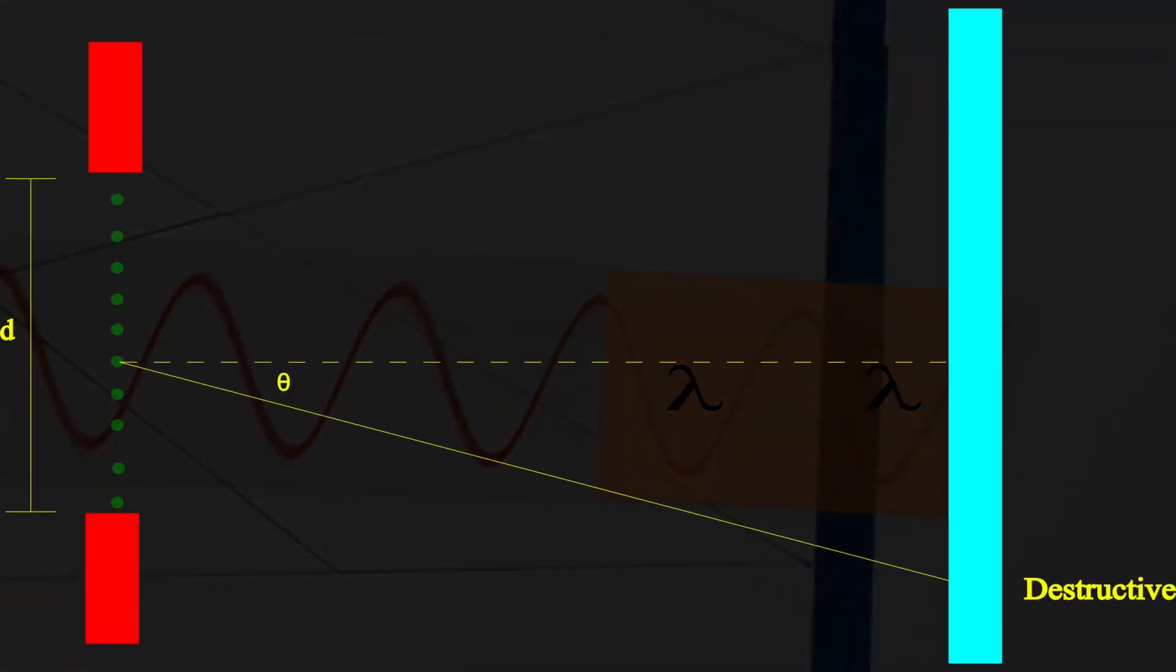We considered just two point sources in the model. But there are many smaller point sources as per the Huygens model. We can generalize the formula for the number of point sources for the location on a screen with destructive interference.